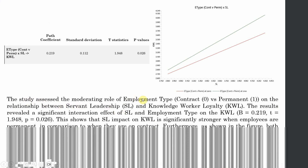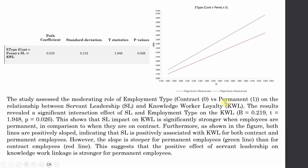The study assessed the moderating role of employment type — that is, contract coded 0 and permanent coded 1 — on the relationship between servant leadership and knowledge worker loyalty. First, describe what you are assessing. The results revealed a significant interaction: the interaction effect of SL and employment type on the dependent variable was positive and significant. This shows that servant leadership's impact on knowledge worker loyalty is significantly stronger when employees are permanent compared to when they are on contract.